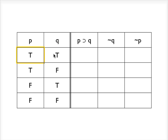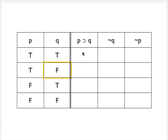Either P and Q could both be true, or they could both be false, or P could be false while Q is true, or P could be true while Q is false. Those are the only four possibilities. Given two atomic sentences, we're going to have four different possibilities. If you have three atomic sentences — P, Q, and R — that's going to lead to an eight-row truth table. If you have four atomic components, that's going to lead to a 16-row truth table.